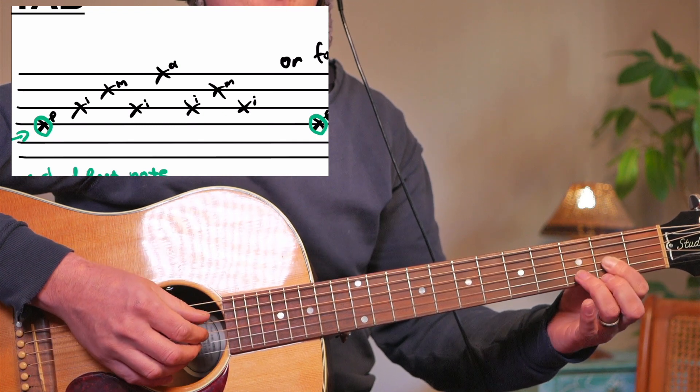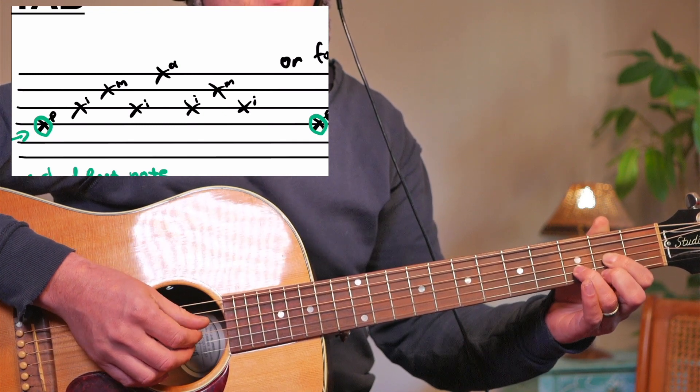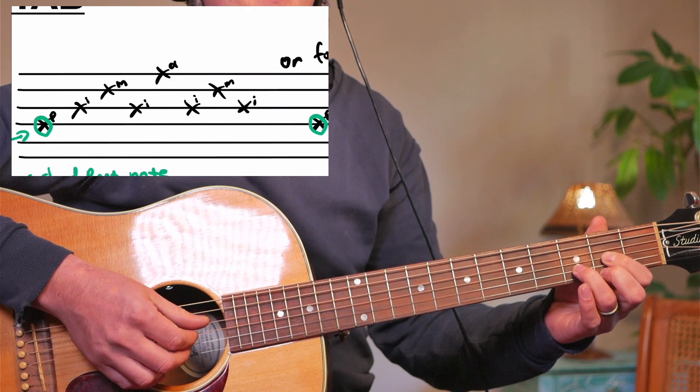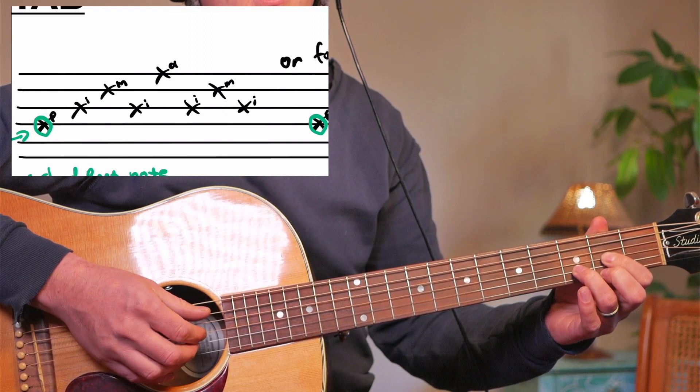And then you do the exact same thing again on the D, but this time the bass of the thumb plays the fifth string, not the fourth string. And then you go.